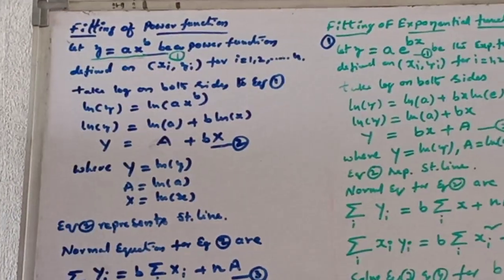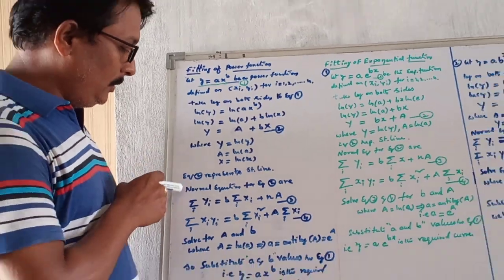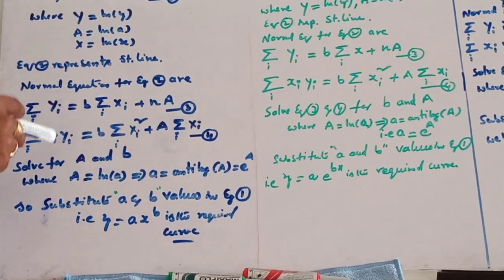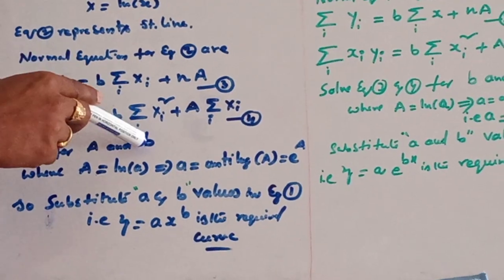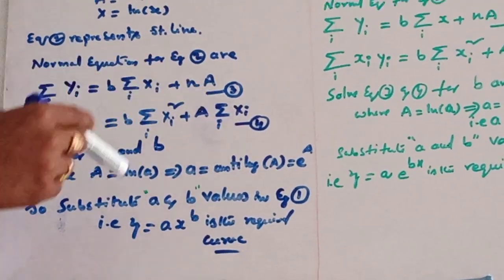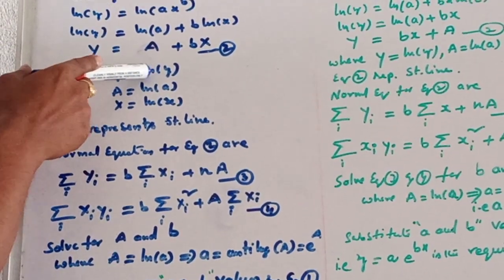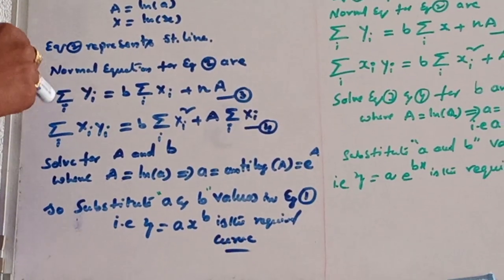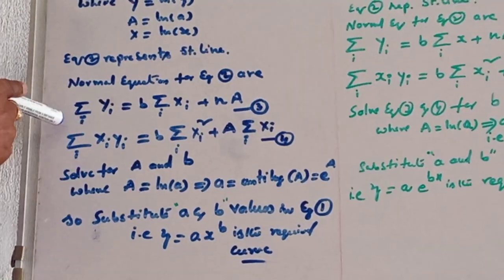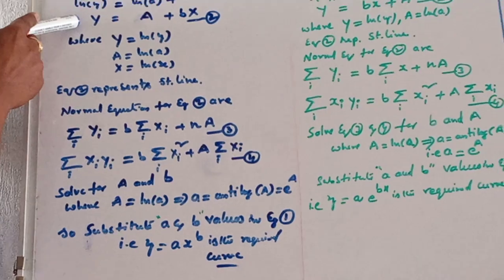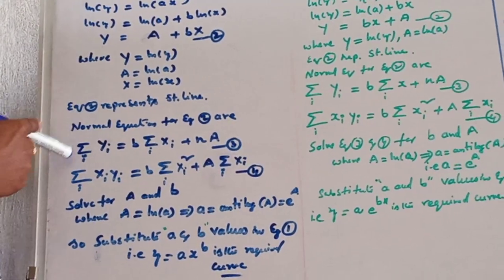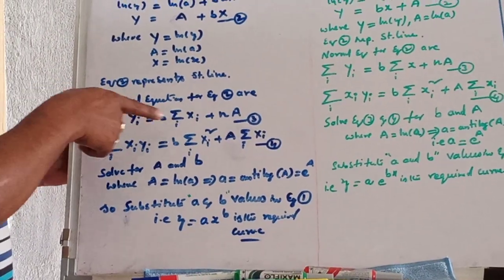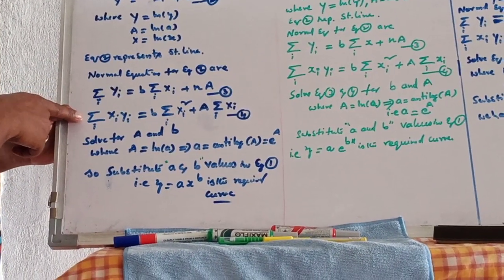Since we already know the fitting of a straight line, the normal equations for this straight line are: sigma Y equal to b times sigma x_i plus n times A, and sigma x_i Y_i equal to b times sigma x_i squared plus A times sigma x_i. Here capital Y is log y, capital A is log a, and capital X is log x.